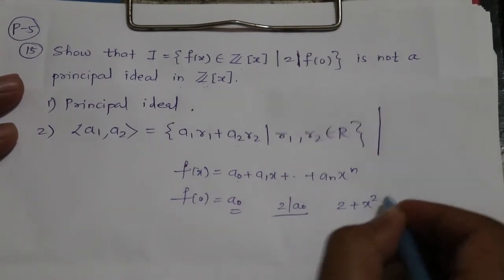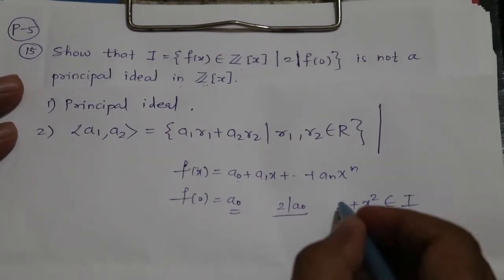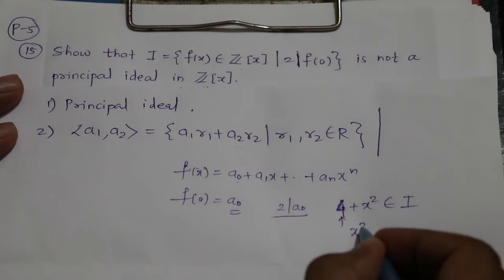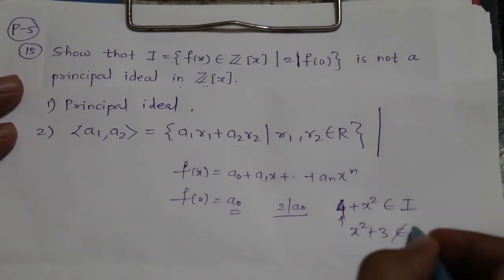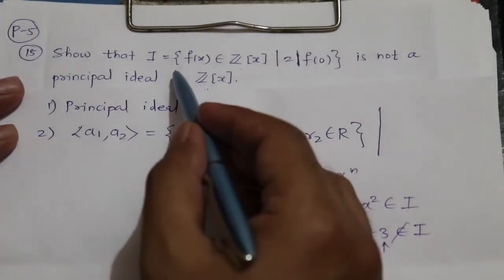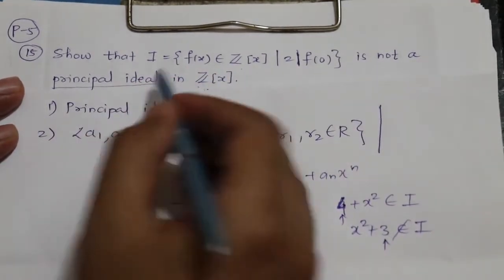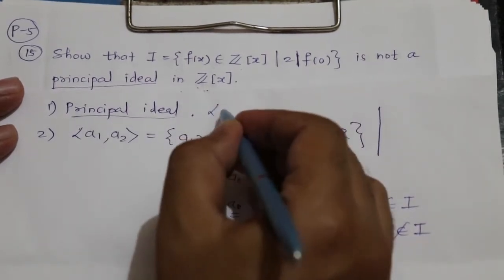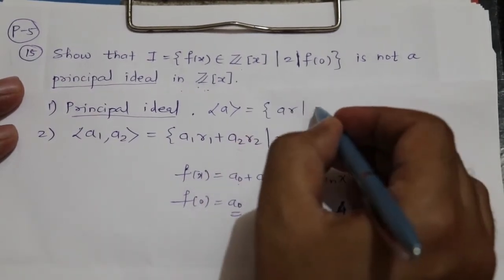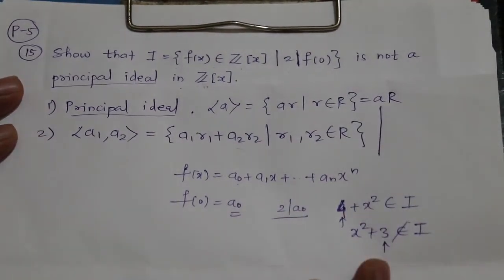For example, 2 + x² is in I since its constant term is 2, which is divisible by 2. But x² + 3 is not in I since 3 is not divisible by 2. Now, recall that a principal ideal is an ideal generated by only one element, written as ⟨a⟩ = {ar : r ∈ R}.